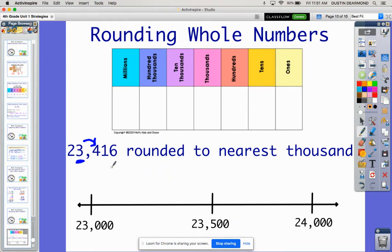Now here's my number, 23,000, 23,416. Well, I know 416 is not going to be up to 500 yet. Knowing what we know about place value and what we've done comparing numbers, I know that the 400 is less than the 500. So I know that this number that I'm using is going to be somewhere over here.